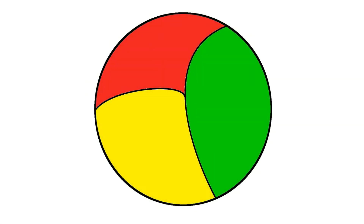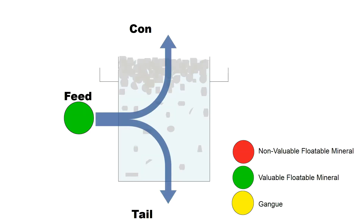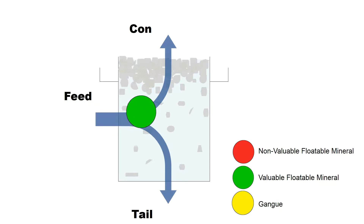We want to do that by using a mineralogical-type data structure. Here we see a particle with valuable floatable mineral, which is green; non-valuable, which is red; and gangue, which is yellow. If we see the green particle — the valuable, floatable, liberated mineral — it goes into the flotation cell, eventually attaches to a bubble, and goes to the concentrate.